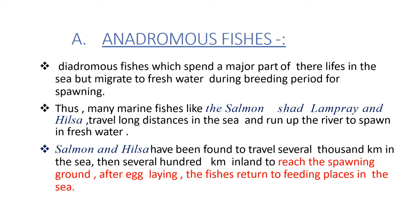Anadromous fishes are diadromous fishes which spend a major part of their lives in the sea but migrate to fresh water during the breeding period for spawning. Many marine fishes like the Salmon, Shad, Lamprey and Hilsa travel long distances in the sea and run up the river to spawn in fresh water. Salmon and Hilsa have been found to travel several thousand kilometres in the sea then several hundred kilometres inland to reach the spawning ground.